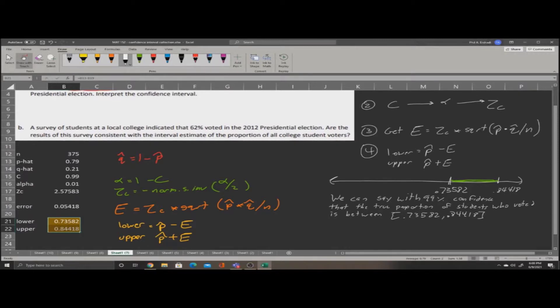Now, question b says, a survey of students at a local college indicated that 62% voted in the 2012 presidential election. Are the results of the survey consistent with the interval estimate? Let's place that 62% on the picture.